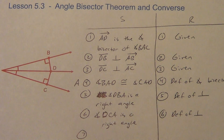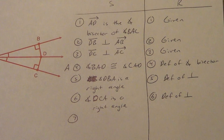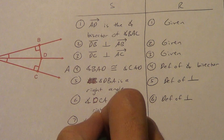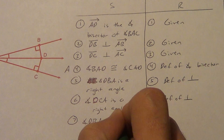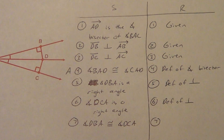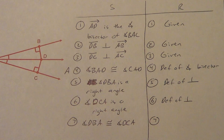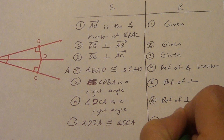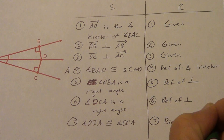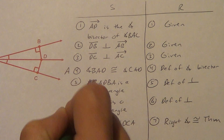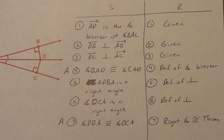Now, what do we know about these two angles? If they're both right angles, they have to be congruent. So angle DBA is congruent to angle DCA. We did this on the perpendicular bisector theorem and its converse. The reason is the right angle congruence theorem. Put an A for angle off to the side.